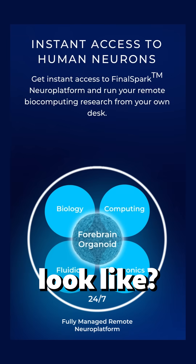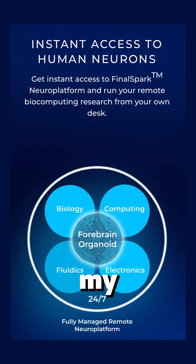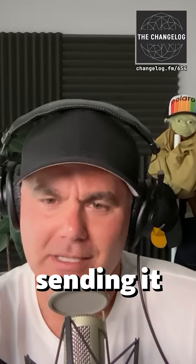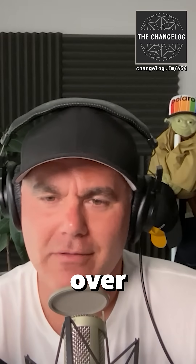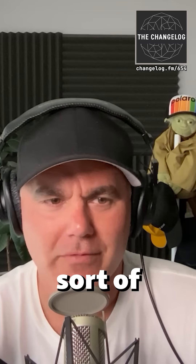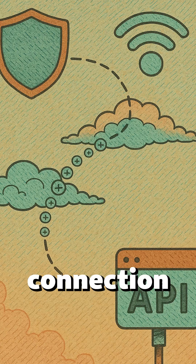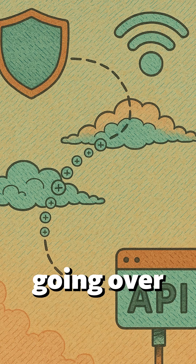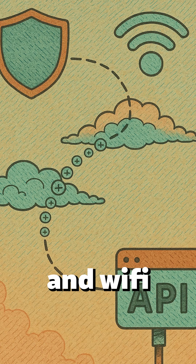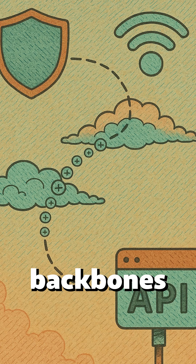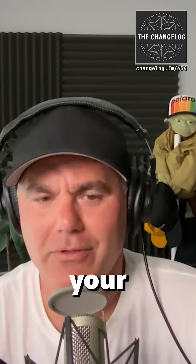What does this wetware look like? I'm programming my Python experiment and sending it over the internet, or some sort of VPN connection, to you guys — going over copper wires and Wi-Fi and whatever backbones and then back.